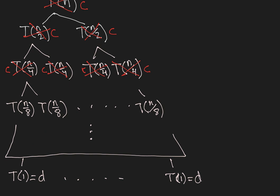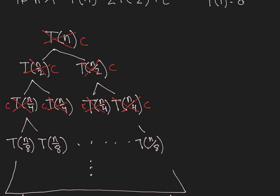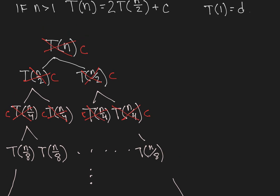So in order to figure out the values and sum of the values in the tree, we need to figure out how many levels there are and what the value at each level is. So we can do a little bit of bookkeeping by writing down the number of the level, what we're representing at that level, and the sum of the values at that level.